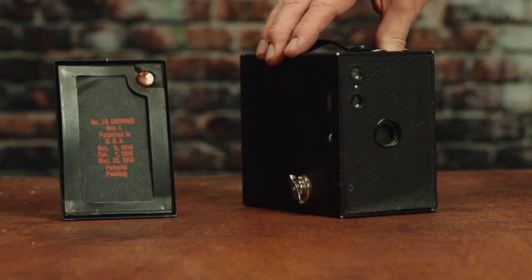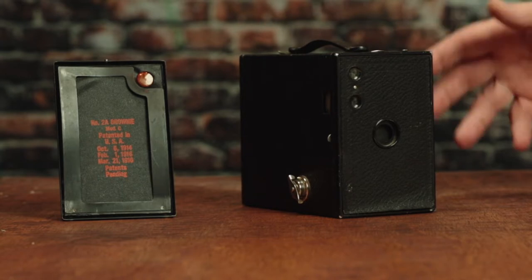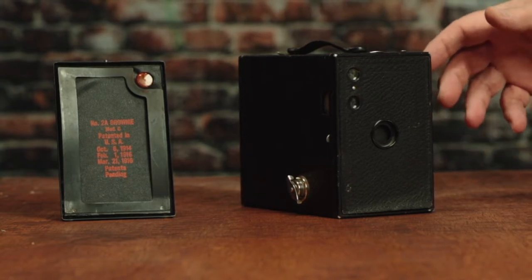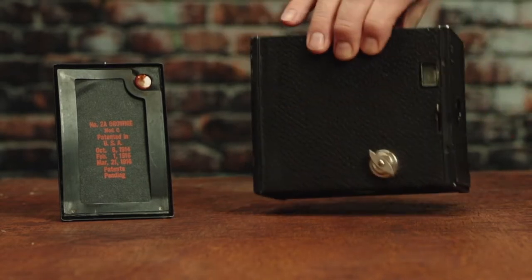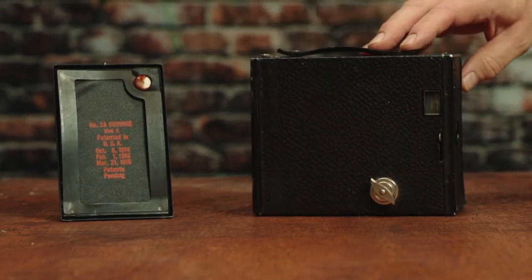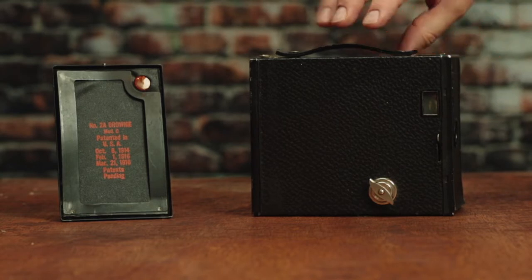So this is a Brownie, as I talked about in a previous video, that's from 1924. It is the 2A model and it's a model C, which is actually an aluminum body. They were made with cardboard bodies before this.